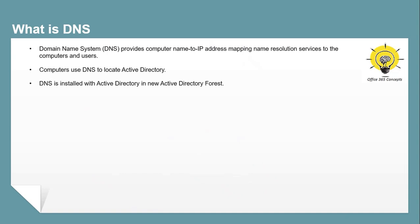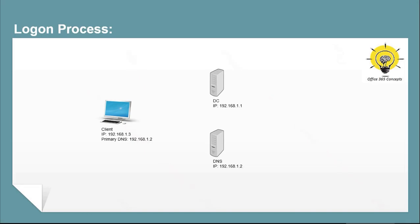Now let's consider a few examples and understand the working of DNS in detail. When a user logs in from the client machine, the request is sent to the primary DNS server — this is a service location request. The client asks the DNS server: do you know where I can find the domain controller? In this request, the client specifically looks for the Kerberos service. Kerberos is an authentication protocol for Active Directory. The DNS server has a service location record or SRV record for all the domain controllers within that domain, so DNS finds that record and sends it back to the client.